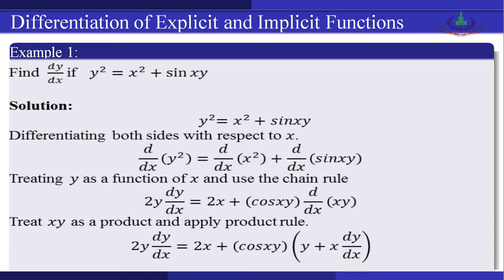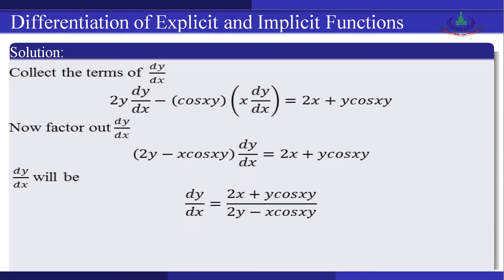Treating xy as a product and applying the product rule, we get 2y dy/dx = 2x + cos(xy) · (y + x dy/dx). Collecting all terms involving dy/dx on one side: 2y dy/dx − x·cos(xy) dy/dx = 2x + y·cos(xy). Taking dy/dx common: (2y − x·cos(xy)) dy/dx = 2x + y·cos(xy). Therefore, dy/dx = (2x + y·cos(xy)) / (2y − x·cos(xy)).